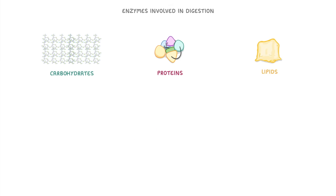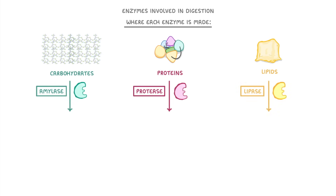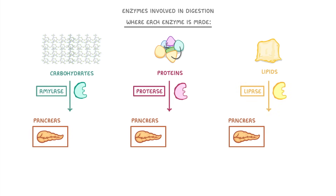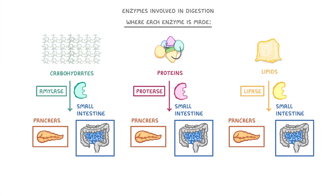Before we finish, as well as knowing which enzyme does what, you also need to know where each of the enzymes are made. The simplest way to remember it is that all three types of enzymes are made by both the pancreas and by the small intestine. Then amylase is also made by the salivary glands in the mouth, and proteases are also made by the stomach.